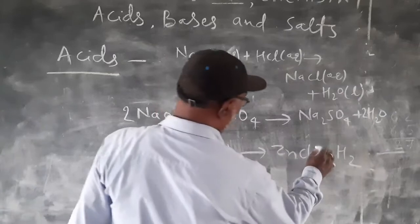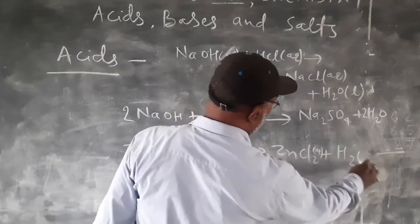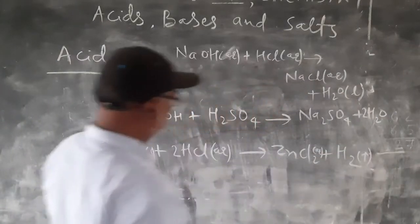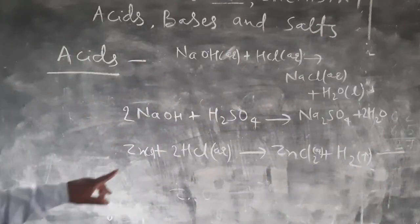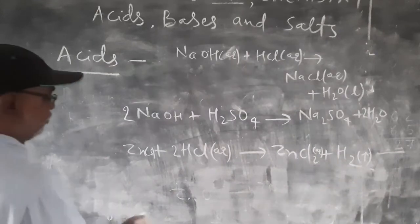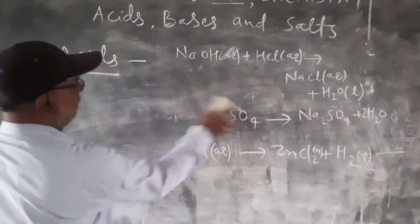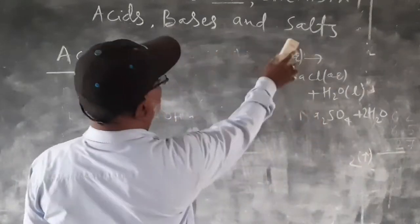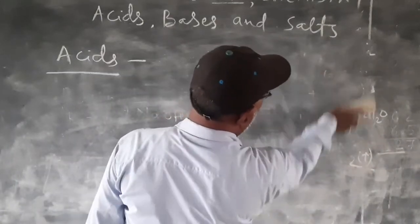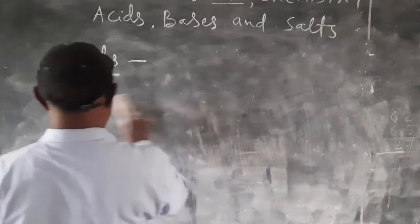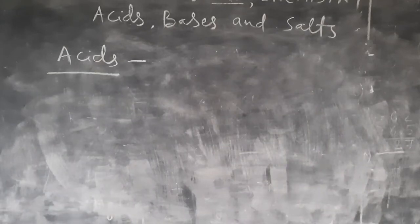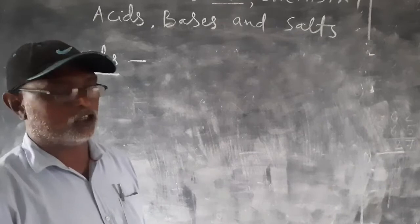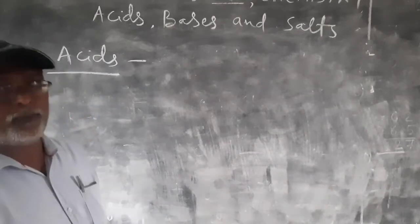This is a salt in aqueous solution and H2 is a gas. Salt is formed by the reaction of an acid with a metal. Sometimes metal oxides also react with an acid to form salt. Metal oxides also react with acid to form salt. Metal oxides are generally basic in nature. Some metal oxides are amphoteric.